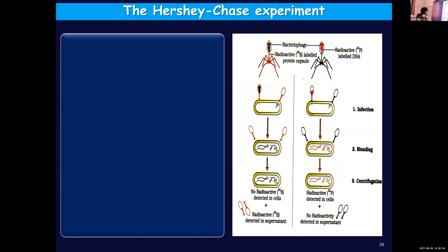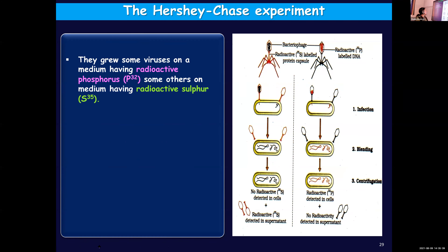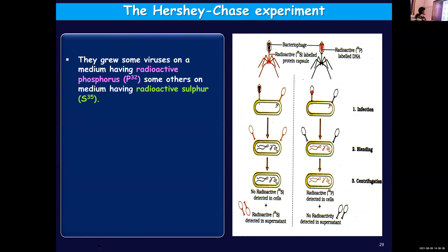Moving on to the details of the experiment: they grew some viruses on a medium having radioactive phosphorus, and some others on a medium having radioactive sulfur. Radioactive substances are used to trace their path. So two radioactive substances were used — one was radioactive phosphorus, the other was radioactive sulfur. These bacteriophages were grown in two groups: some in radioactive sulfur and some in radioactive phosphorus.